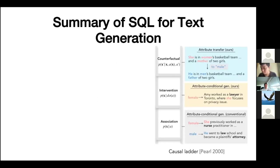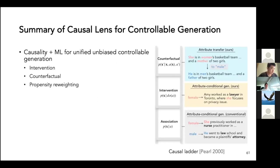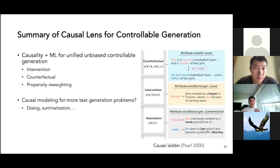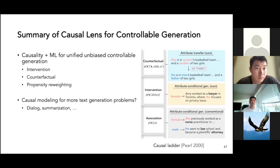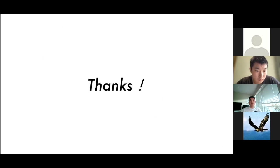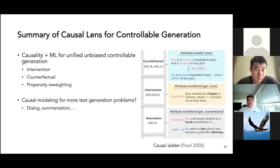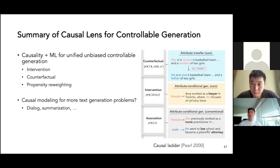This is the second work — causal inference for text generation. We combine causality with machine learning for a unified, unbiased, controllable generation framework using tools like intervention, do-calculus, and propensity weighting. It will be very interesting to see how this causal modeling can be generalized to other text generation problems like dialogue and summarization, to model more complex causal relationships. That's pretty much what I wanted to present today — a reinforcement learning framework and a causal framework. I'm happy to take more questions.